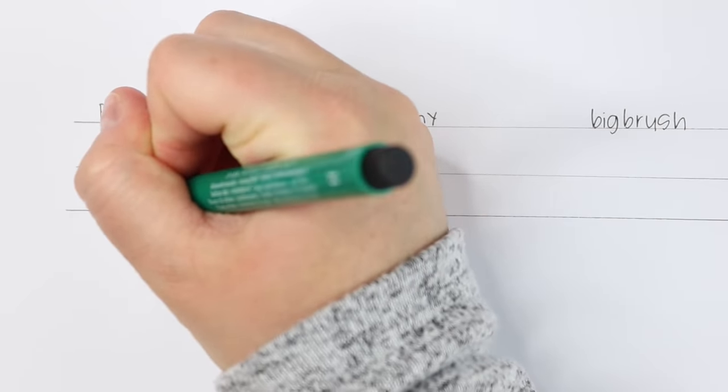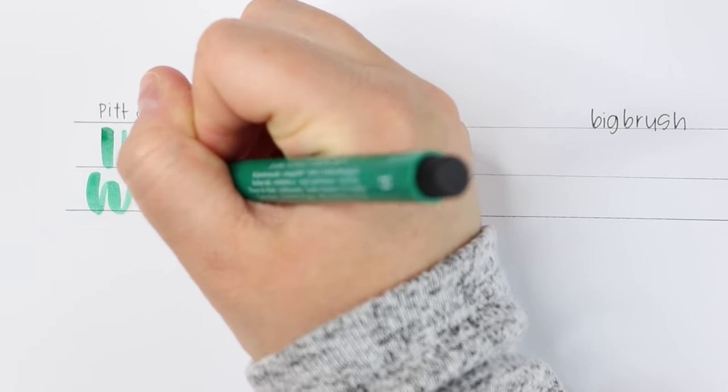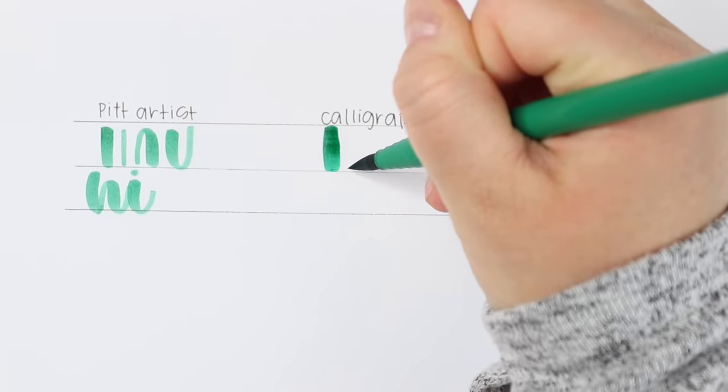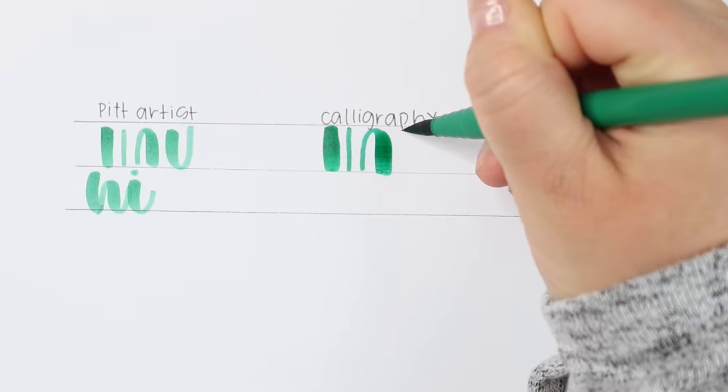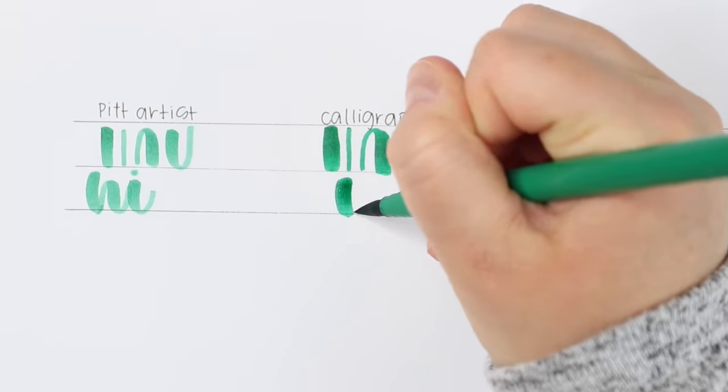One thing that I do want to point out that's different about these brush pens is the ink. The calligraphy brush pen is water-based while the Pitt Artist brush pens are India ink. I actually have a full review on the Pitt Artist brush pens so if you're curious about blending and other details about those I will link that video below but for now I'm just going to focus on how they write.